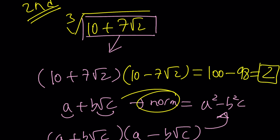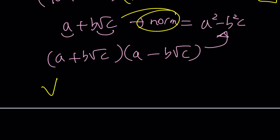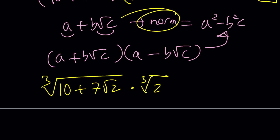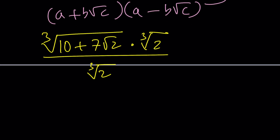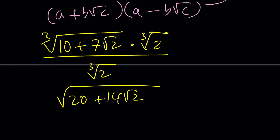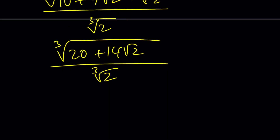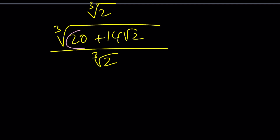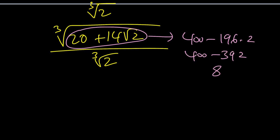The norm is 2, which is not a perfect cube — Houston, we have a problem. To fix this, we multiply and divide by ∛2. Inside the radical we then have 20 + 14√2, divided by ∛2. The norm of (20 + 14√2) is 400 − 196×2 = 400 − 392 = 8, which is a perfect cube. That's perfect — this is ready for denesting.